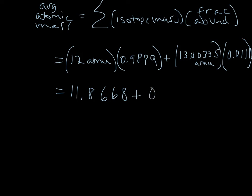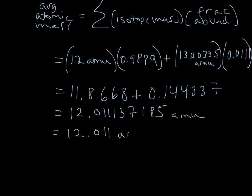Plus 0.144337 for the second. And that's going to give us 12.011137185 AMU, and so we're not completely ridiculous. We're just going to go ahead and round it to some reasonable amount of decimal places, so we're going to get 12.011 AMU. And that's what matches the periodic table, so that's our average atomic mass.